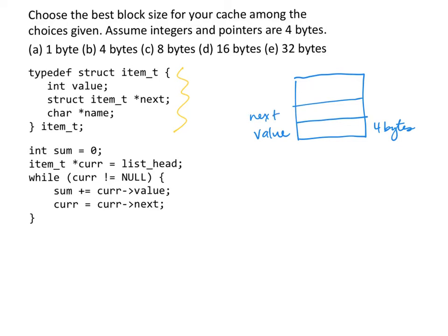And finally we have a char star name, which is this. And name actually is also four bytes. So each of these elements is four bytes.